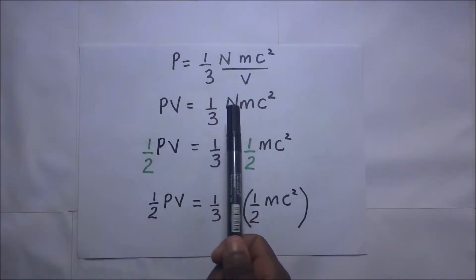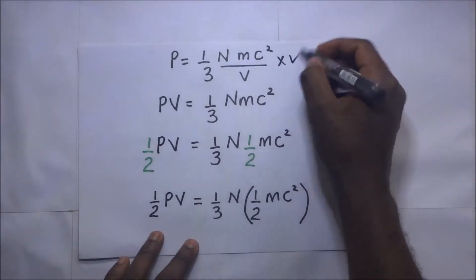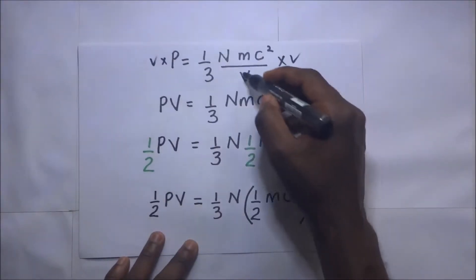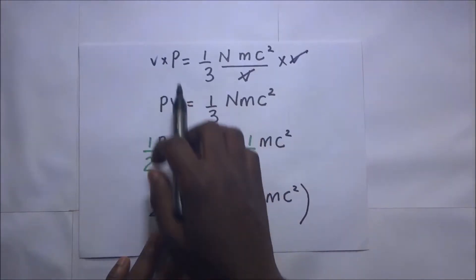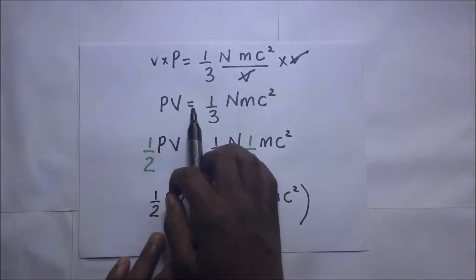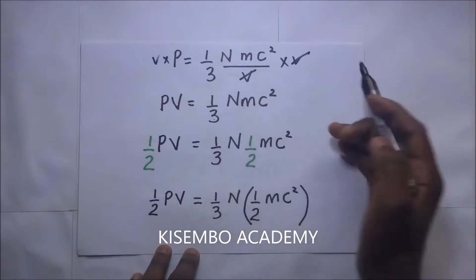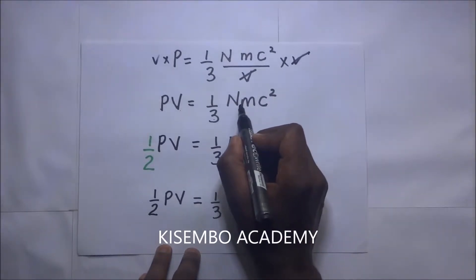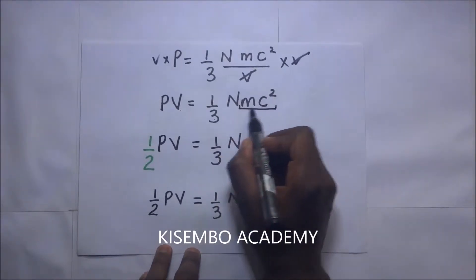we shall rearrange this equation. We multiply times V on both sides. When we multiply times V, this V goes with that V. You remain on this side: pressure times volume is going to be equal to one-third N M c squared. Now if you see this N M, mass times M c squared,